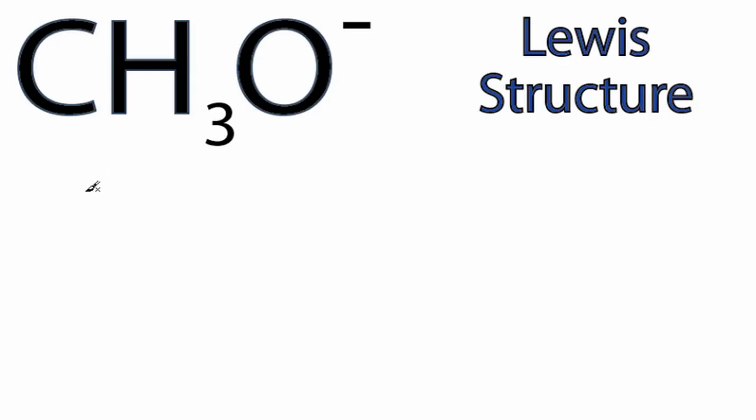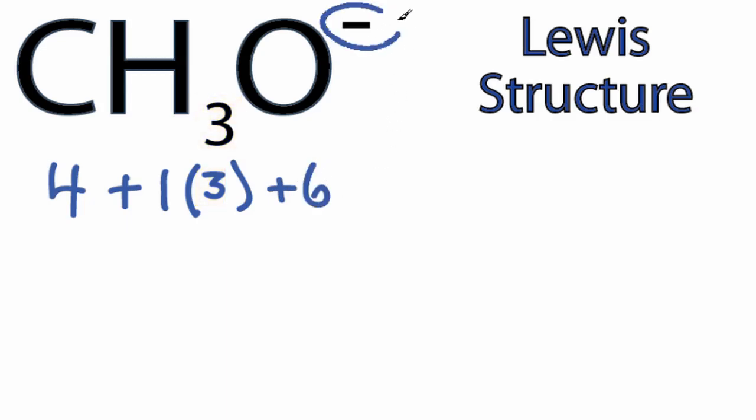For the CH3O- Lewis structure, we have four valence electrons for carbon, one for hydrogen, but we have three hydrogens, six for oxygen, and this negative sign up here means we have an additional valence electron for a total of 14 valence electrons for the CH3O- Lewis structure.